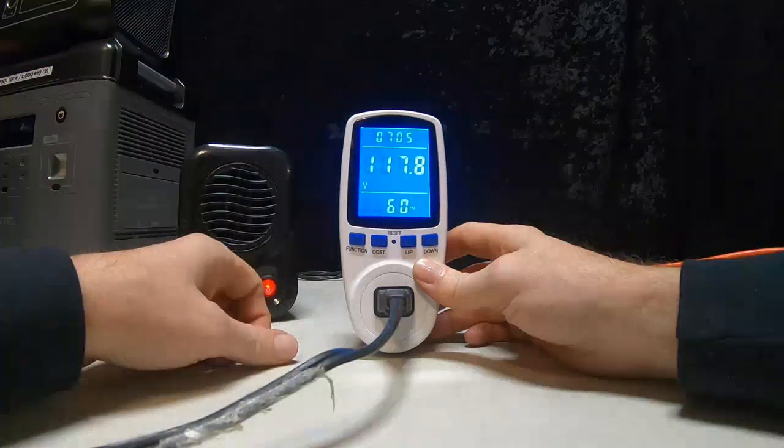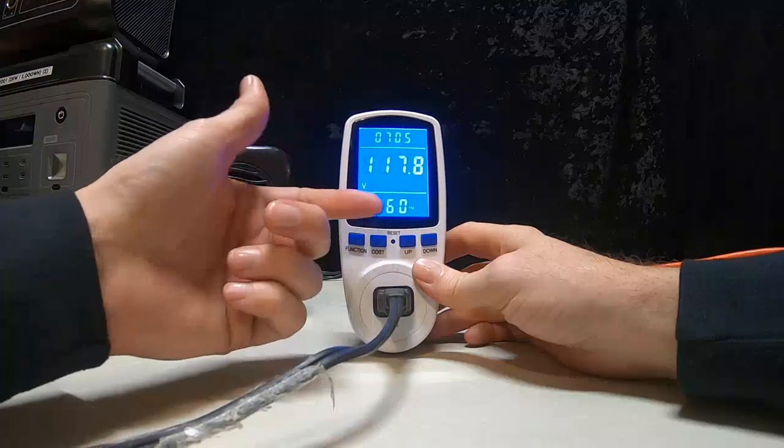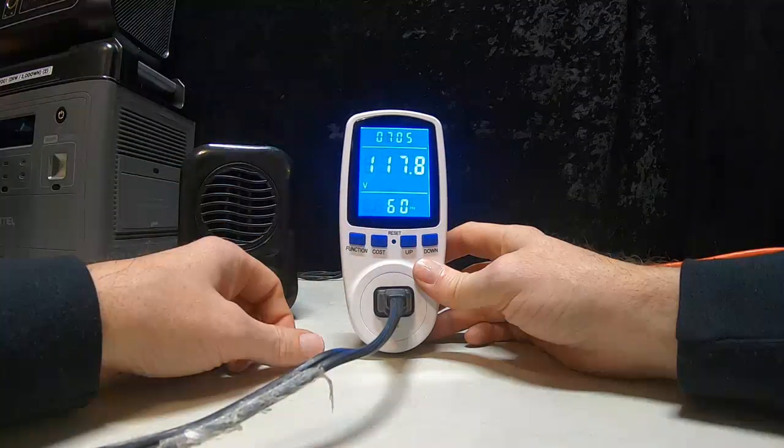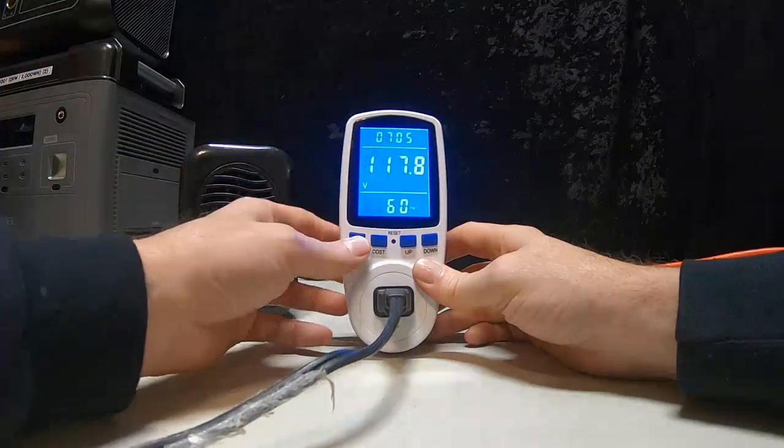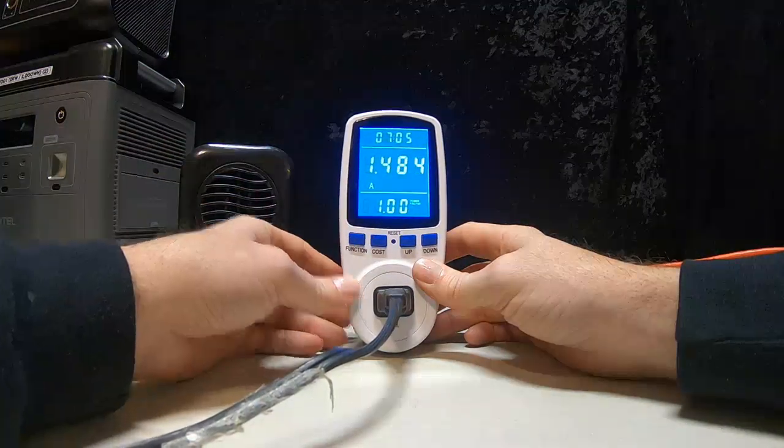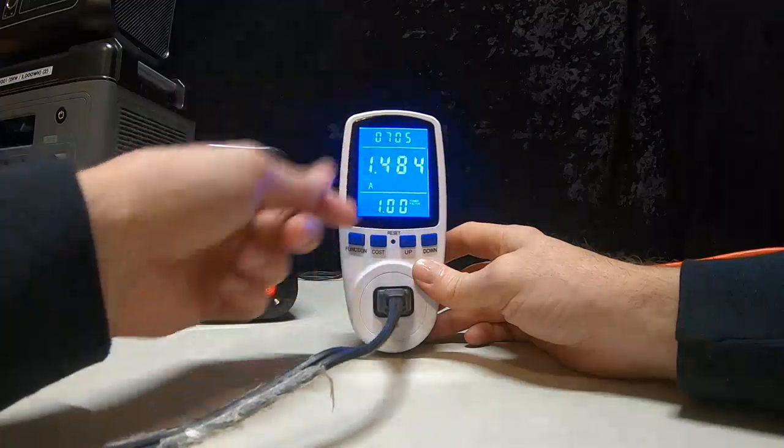Anytime you pull a load, the voltage always drops because it puts a strain on it. Here's your 60 hertz, so your pure sine wave right there. Notice your timer is still there. That's cool.